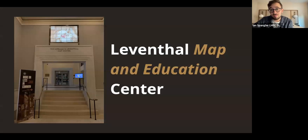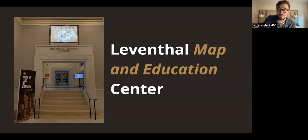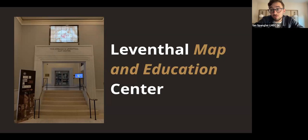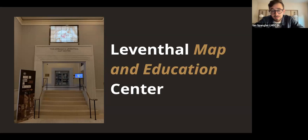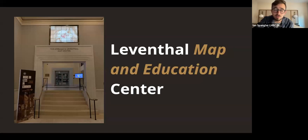We'll dive into some of those questions today, focusing on a couple of specific types of maps you can find at the Leventhal Center and the BPL's collections, which help tell the stories you might be interested in about your own family histories. The Leventhal Map and Education Center operates out of the Boston Public Library's Copley location. We've been there since about 2004. The Map Center stewards the BPL's collection of cartographic objects — we estimate that number to be about a quarter million, including flat maps, rolled maps, charts, globes, atlases, and many more kinds of cartographic material, all of which is really yours as the public.